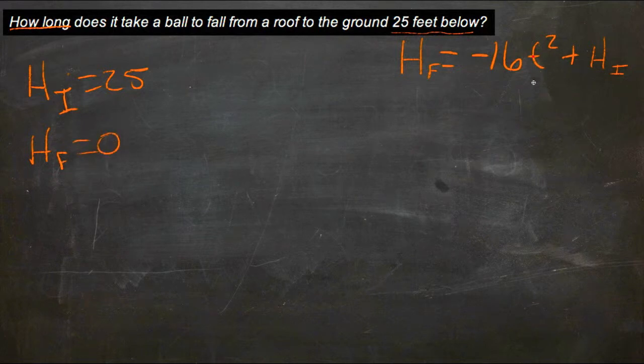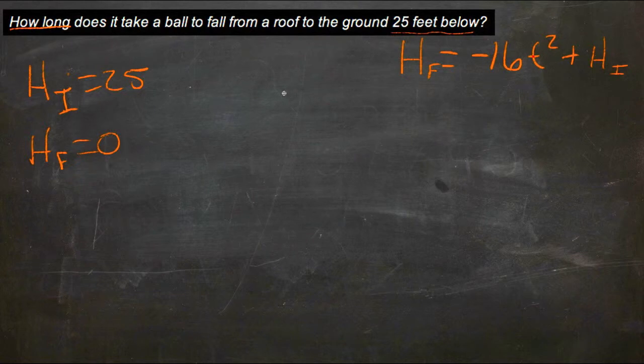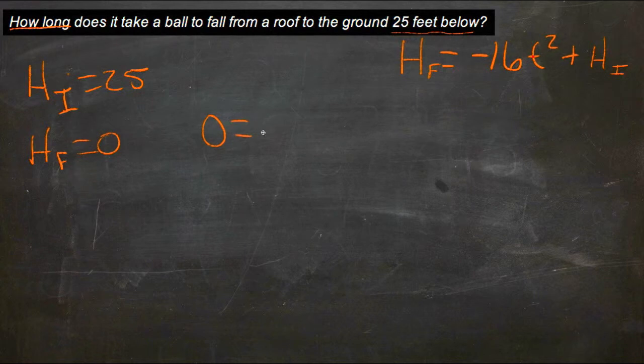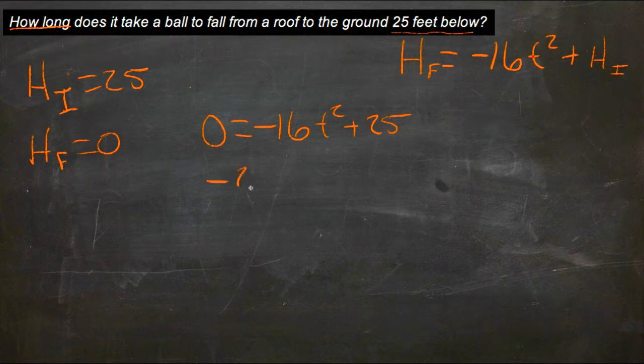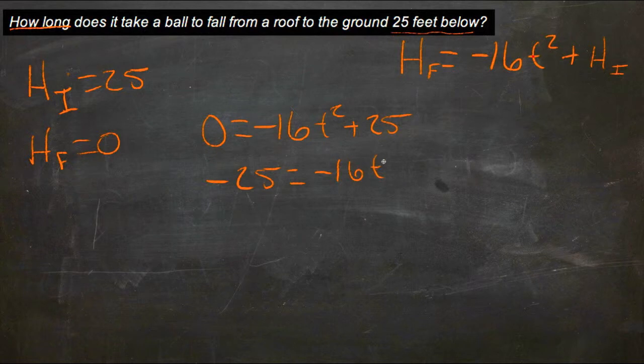So if we substitute in our values here, time is going to be our only variable. So we'll substitute in final height as 0. 0 equals negative 16 t squared plus 25. Now we subtract 25 from both sides, and we get negative 25 is equal to negative 16 t squared.